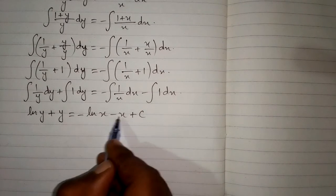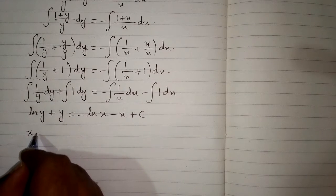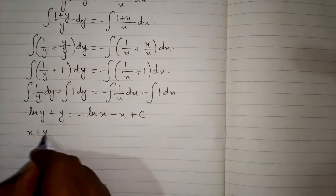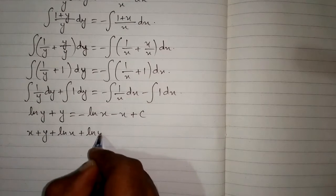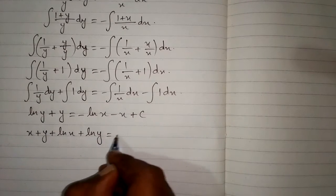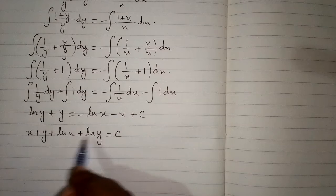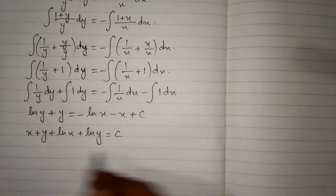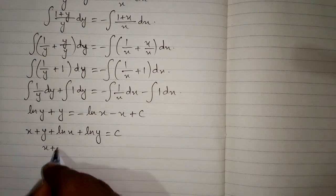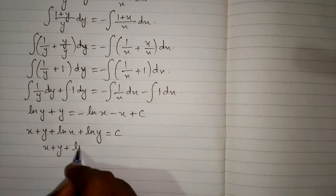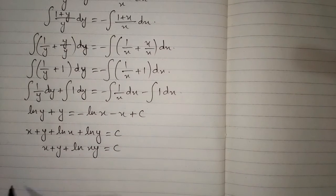Taking all terms to one side, we have x plus y plus ln x plus ln y is equal to c. We then apply the logarithm property, giving us x plus y plus ln(xy) is equal to c.